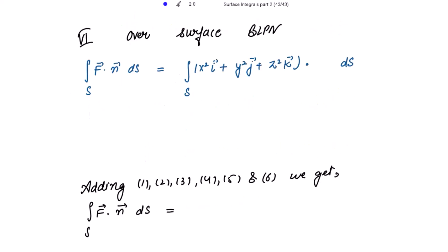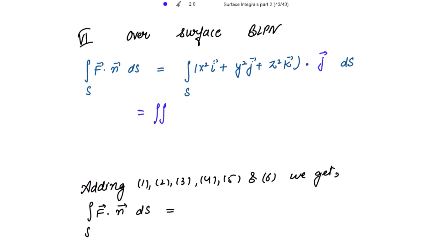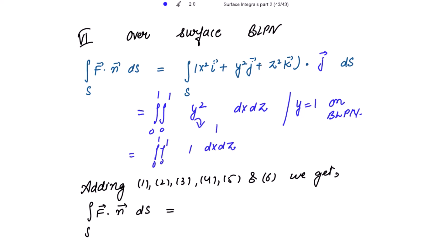Over the last surface, the outward unit normal is along the positive y-axis, so n̂ = ĵ, and ds = dx dz. On this surface y = 1, so the integrand is y² = 1. Solving this integral gives 1. Marking this as 6.